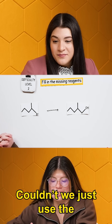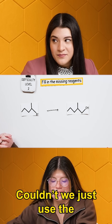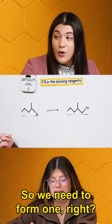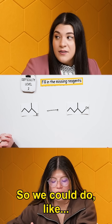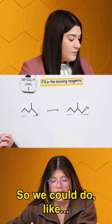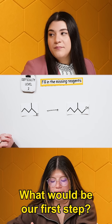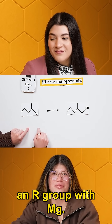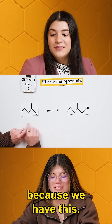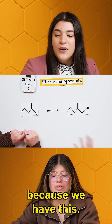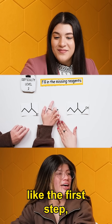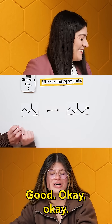Couldn't we just use the Grignard reagent? So we need to form one, right? So we could do like... what would be our first step? Our first step would just be an R group with Mg. The first step would be the magnesium to attach?